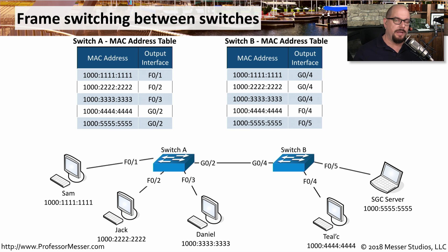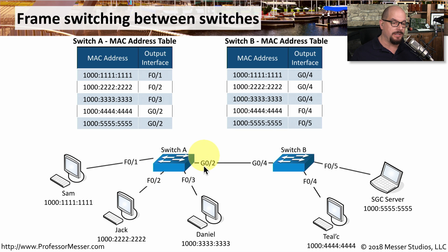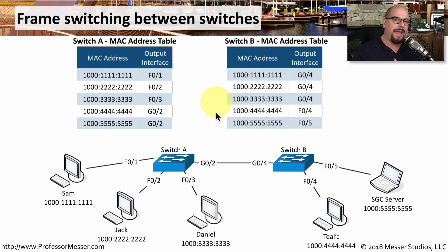If this is a larger network, it might have multiple switches — for instance, Switch A and Switch B. We not only have fast ethernet interfaces; some of these interfaces are gigabit communication that start with the letter G. There are two separate MAC address tables, one for Switch A and one for Switch B. Switch A doesn't know what's inside the Switch B MAC address table, and Switch B doesn't know what's inside the Switch A MAC address table. They all work independently from each other.